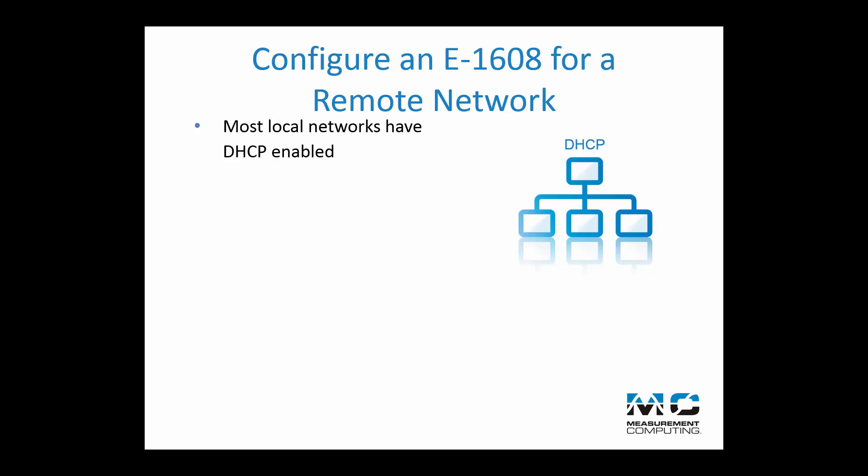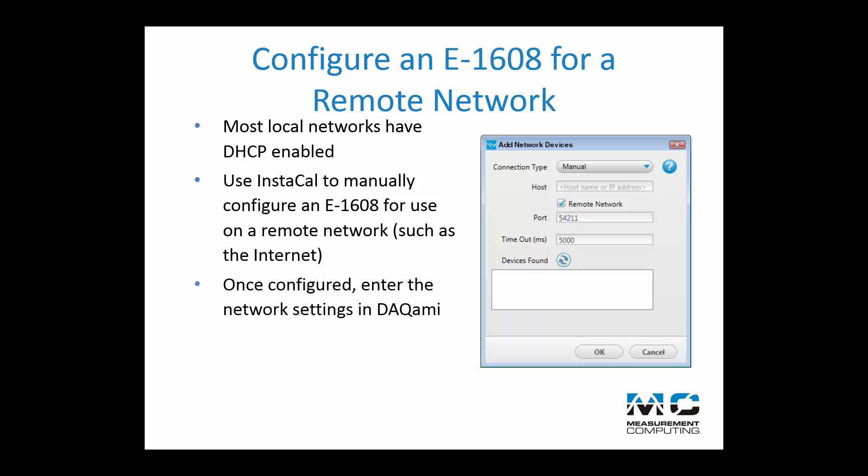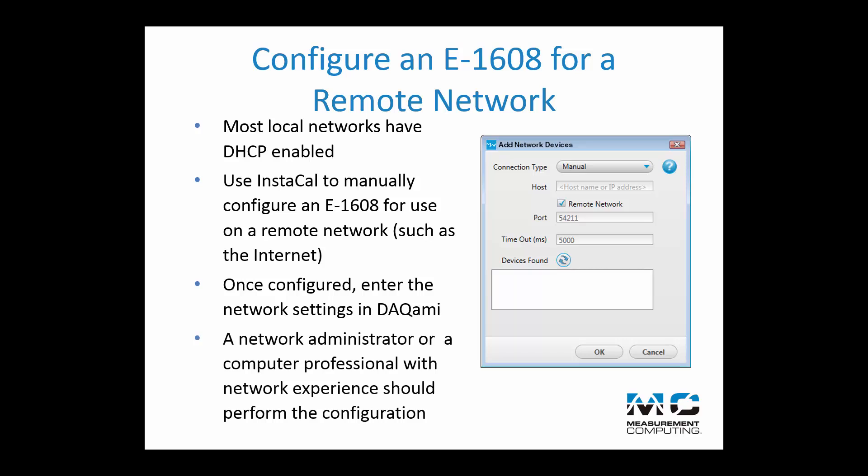In most cases, you will be connecting the E1608 to local networks that dynamically assign an IP address, eliminating the need to configure the device for the network. However, to install the E1608 on a network without DHCP, such as a remote network like the internet, the E1608 must be manually configured. This network configuration can be performed with Instacal. Once the E1608 is properly configured in Instacal, close Instacal, run DACME, and select Manual in the Add Network Devices dialog box, and enter the network settings that were configured for the device. Measurement Computing recommends that this configuration be performed by a network administrator or computer professional with network experience.